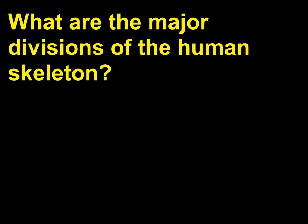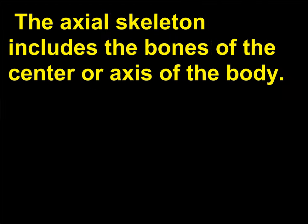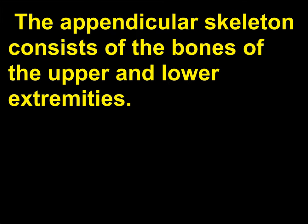What are the major divisions of the human skeleton? The human skeleton has two major divisions: the axial skeleton and the appendicular skeleton. The axial skeleton includes the bones of the center or axis of the body. The appendicular skeleton consists of the bones of the upper and lower extremities.